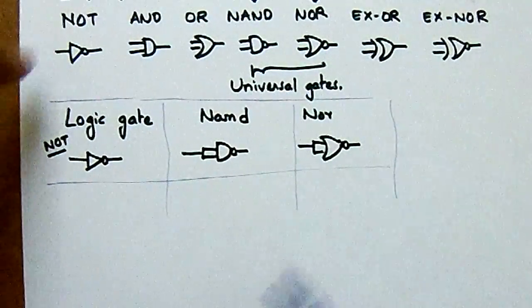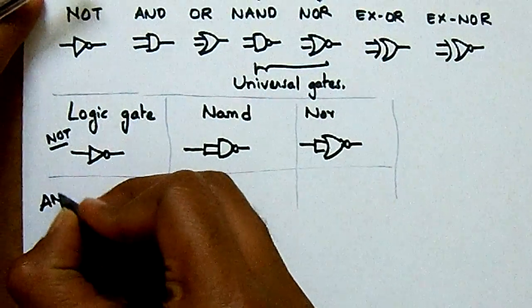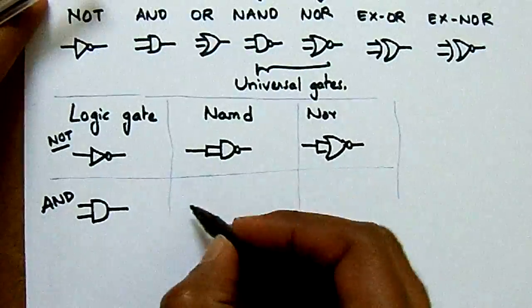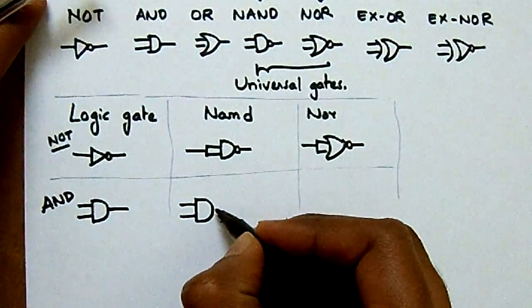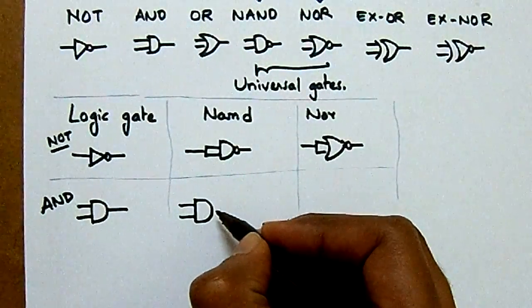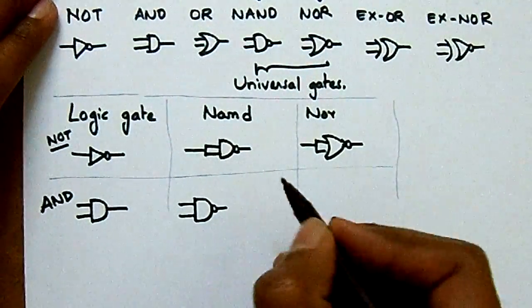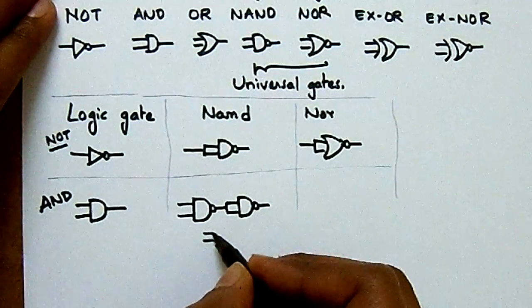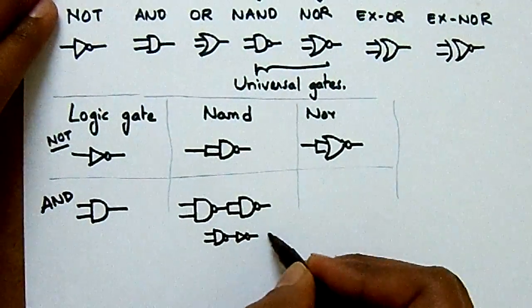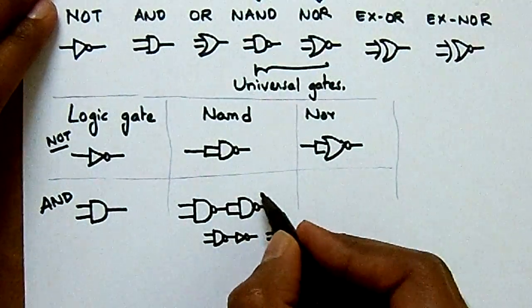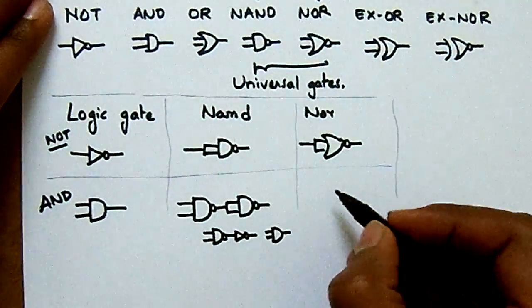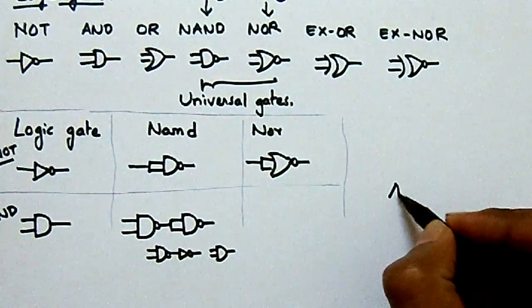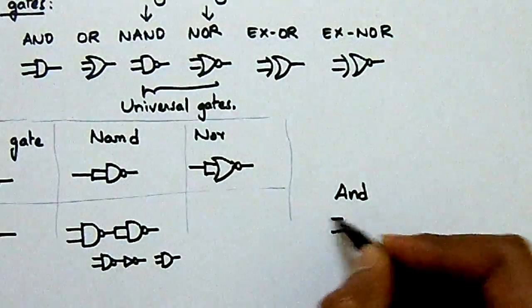Now let us represent AND gate in terms of NAND and NOR. We know that two inverters back to back cancel each other. So AND gate is a NAND gate followed by an inverter — NAND gate with inverter equals AND gate. For NAND, we note that A·B with a complement can be split using double complement and Boolean algebra.